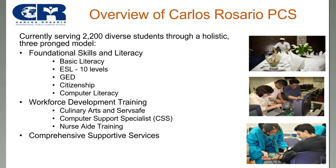Currently at Carlos Rosario, we have ten different levels of ESL, starting from pre-literacy all the way up to level eight, which is advanced. We also offer career training programs in culinary arts, computer support specialist, and nurse aide training, as well as GED in English and Spanish, a citizenship class, and computer literacy. A big part of what we do to help students succeed and persist is offering comprehensive supportive services through counseling and career help.